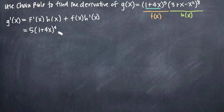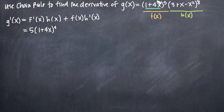Once we take this derivative, according to chain rule, we have to multiply this result by the derivative of the inside function. So now we're looking at the inside, which is 1 plus 4x. The derivative of that is just 4, because the derivative of 1 (a constant) is 0, and the derivative of 4x is 4, so 0 plus 4 gives us 4. The derivative of the inside is 4, so we need to multiply our result by 4. That accounts for f prime of x, the derivative of f of x.